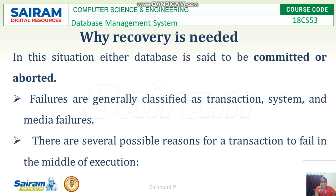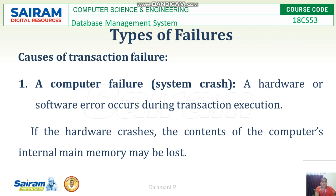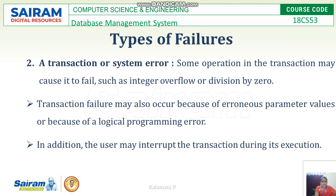There are several possible reasons for a transaction to fail in the middle of execution — transaction problems, software problems, hardware problems, or power problems. The types of failures are distributed into transaction failure, system failure, and media failure. The first cause of transaction failure is a system crash or computer failure, where hardware or software errors occur during transaction execution and the contents of main memory may be lost.